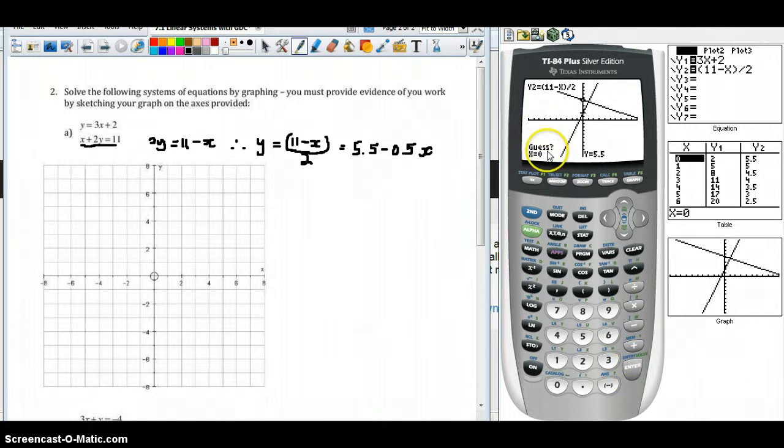Now the calculator is asking for a guess. We don't really need to guess. This function is because there may be graphs with more than one point of intersection, so the calculator requires that you type in a value near the intersection point. In this case, that's not necessary because linear functions can only possibly have one intersection point. We'll just go ahead and hit enter as our guess, there's no need to type in a value. We have our solution now, the intersection at X equals 1 and Y equals 5.